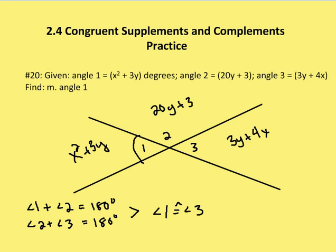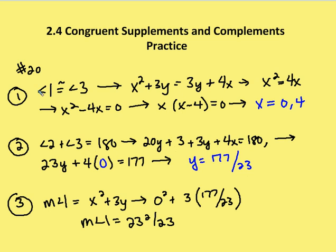We're going to use substitution to solve this problem. Since angle 1 is congruent to angle 3, I know that x squared plus 3y, which is angle 1, is equal to 3y plus 4x, which is angle 3. That simplifies to x squared equals 4x. Subtracting 4x from both sides gives x squared minus 4x equals 0. Factoring out x gives x times (x minus 4) equals 0.